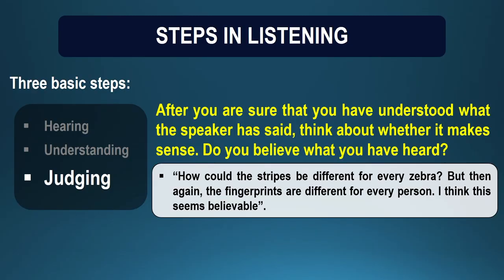Then you think — yeah, but each individual's fingerprints are different, aren't they? So if fingerprints are different, zebras can be different. From the first stage of hearing that two zebras are different, to understanding that maybe the stripes are different, to actually judging and comparing it with another known scenario — you have now come to a conclusion of your own. This is the process of listening. You have identified each aspect: hearing, understanding, and judging.